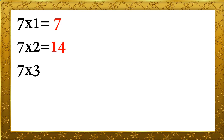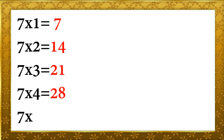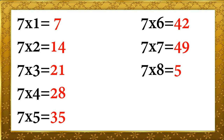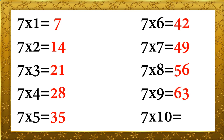7 ones are 7, 7 twos are 14, 7 threes are 21, 7 fours are 28, 7 fives are 35, 7 sixes are 42, 7 sevens are 49, 7 eights are 56, 7 nines are 63, 7 tens are 70.